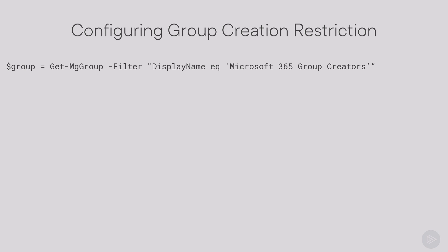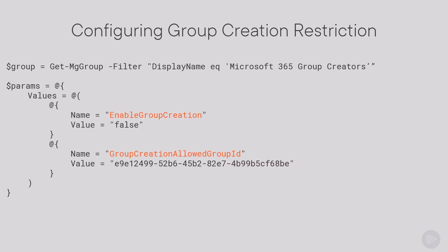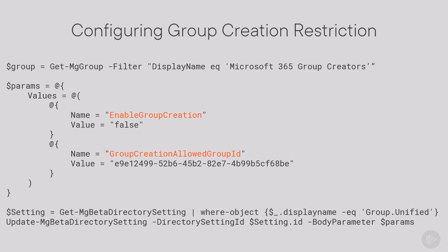To configure it, we will create a hash table with two values inside. First, Enable Group Creation, which we need to set to false — and if we only configure this setting without the second, we are completely turning off group creation inside the tenant. Then we have a second setting called Group Creation Allowed Group ID, in which we say except for the members of this group. So basically we're saying group creation is turned off for everybody except the members of this group, and here is the ID of the group. We will then update the settings exactly like we have done in the past examples from this module.